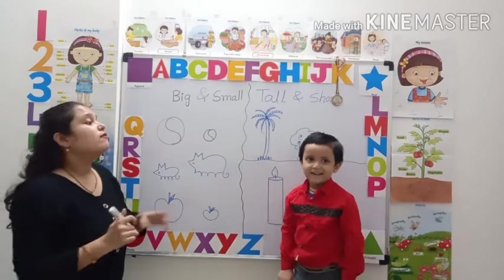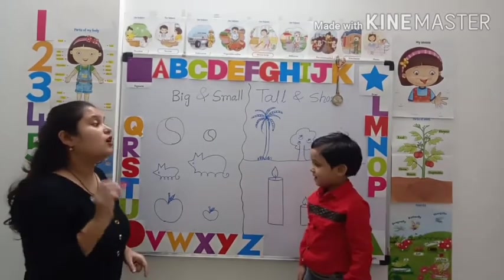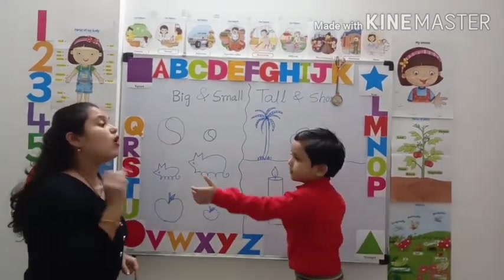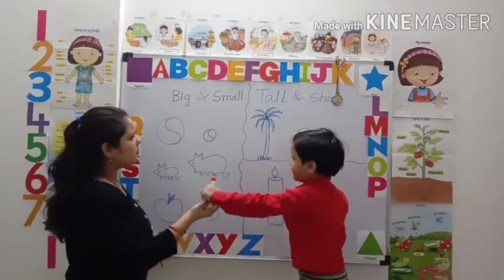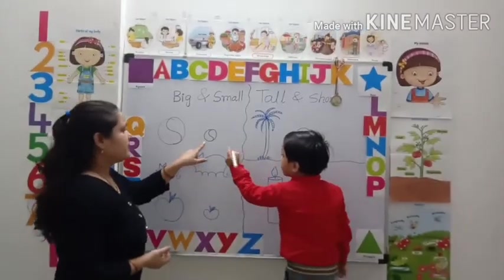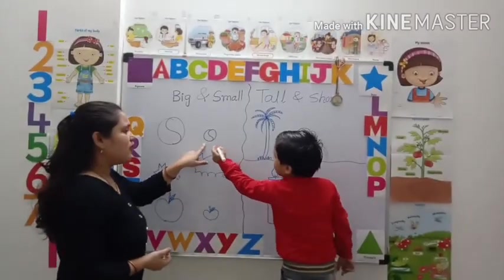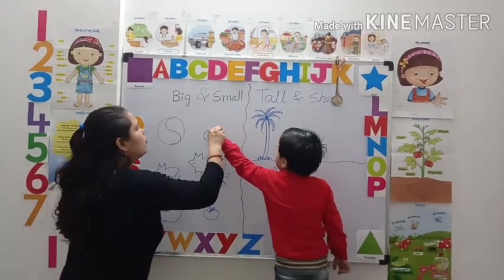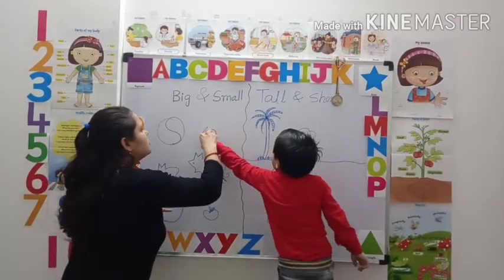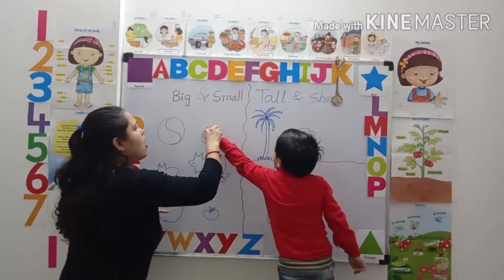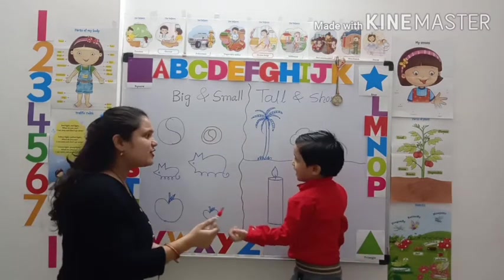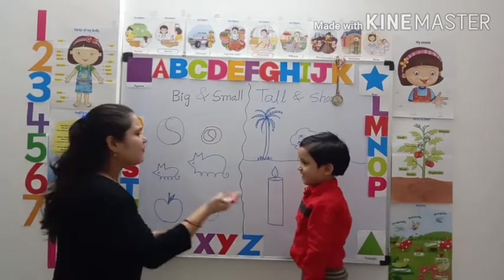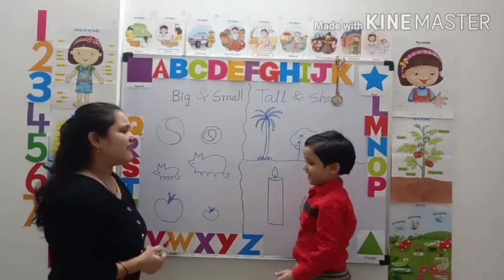You have to circle only the small object. Only small object. Is this small? Yes, very good. You can make a circle on only the small object. Good job. Clap for yourself.